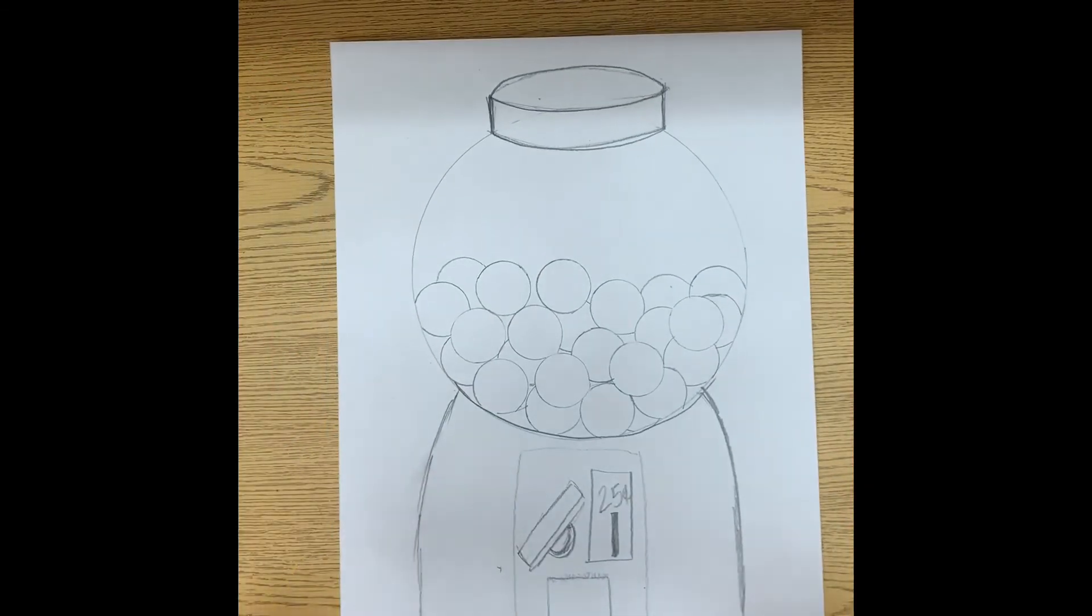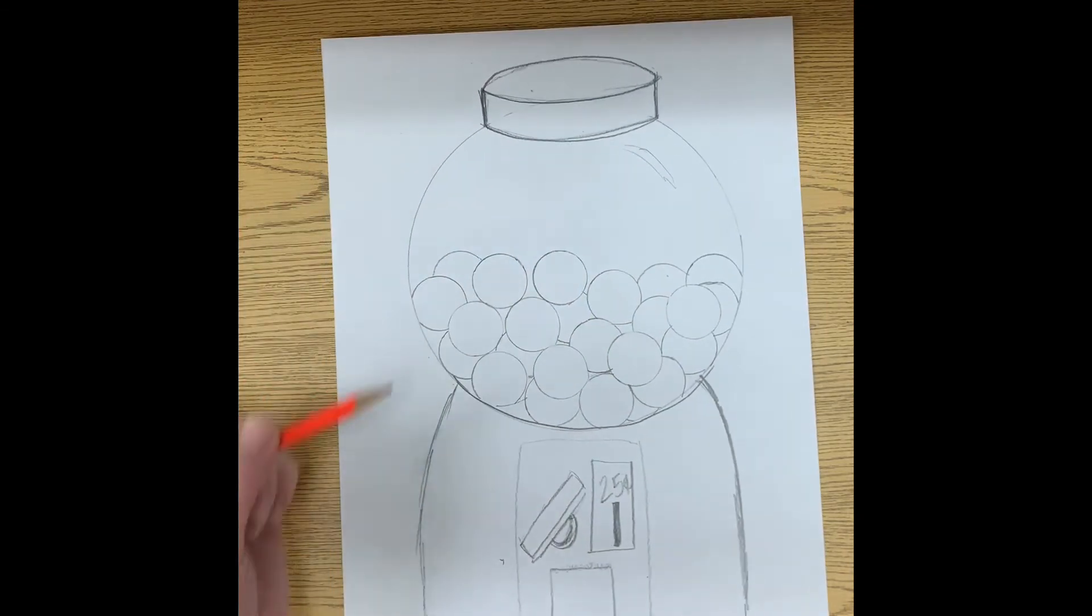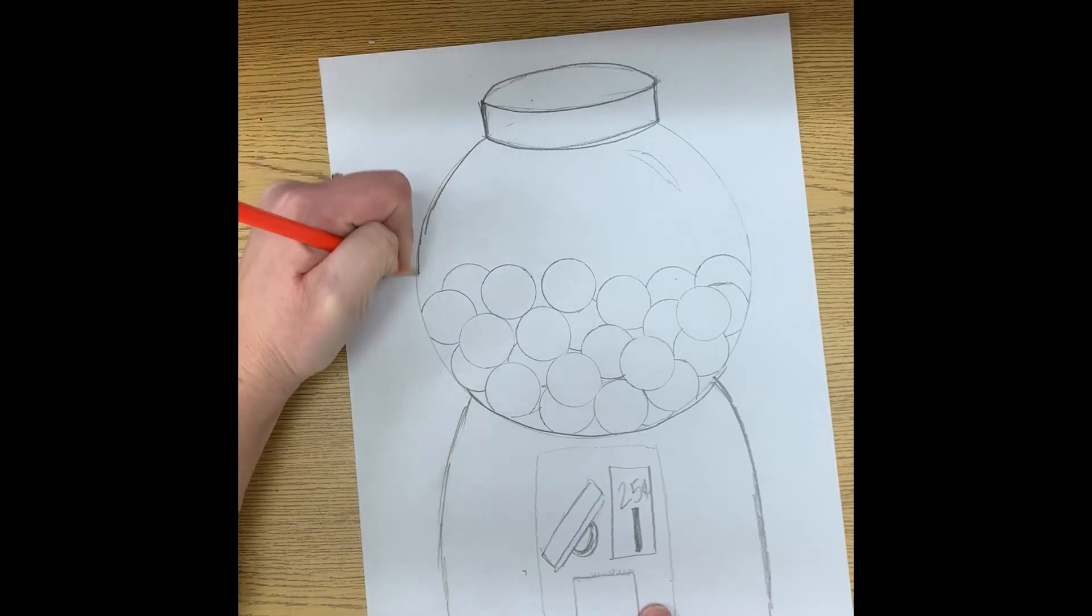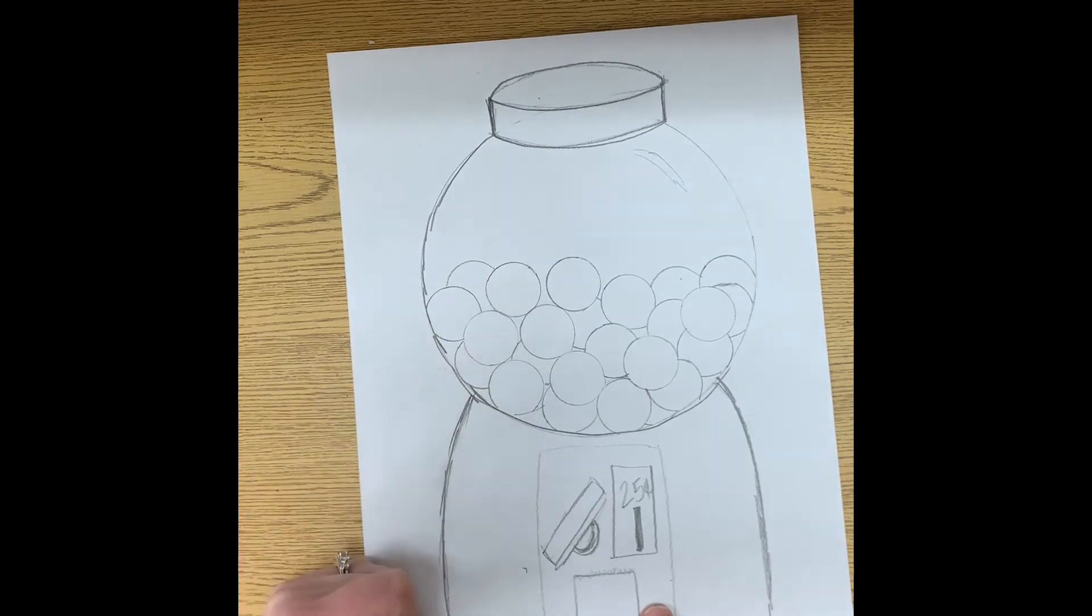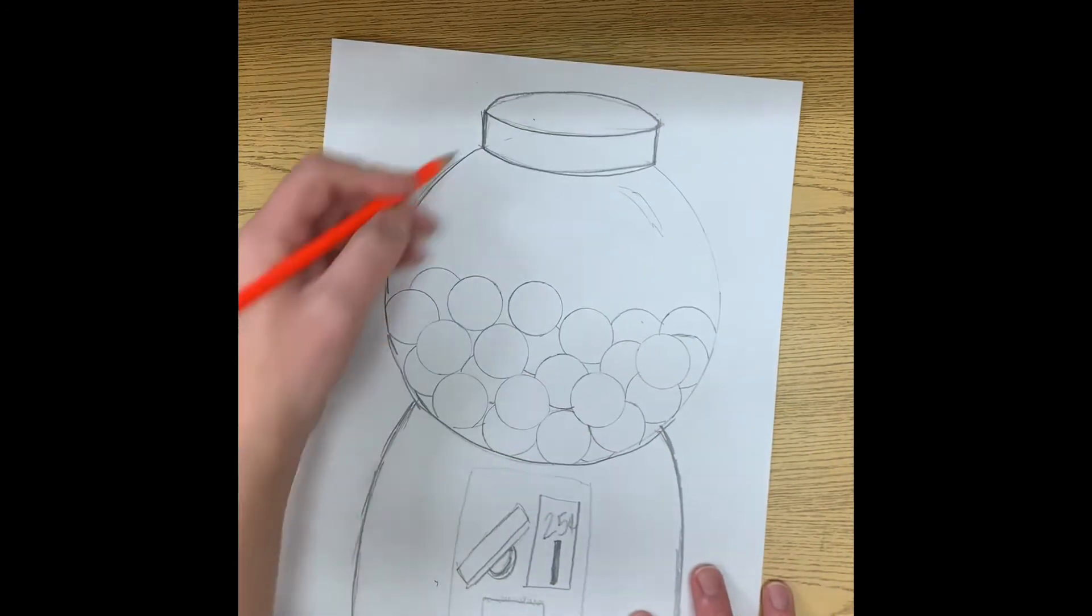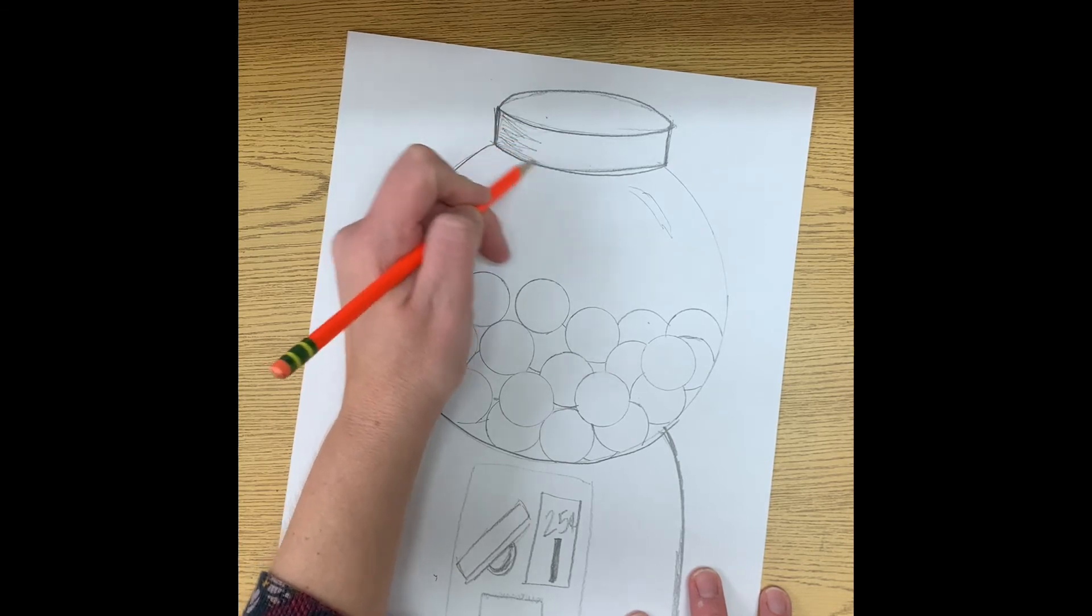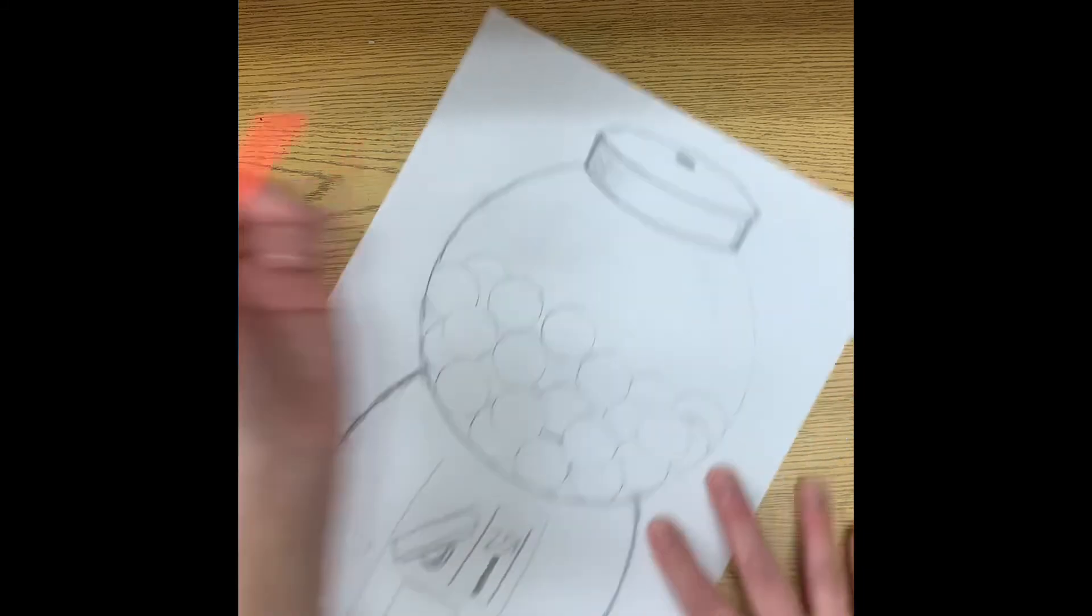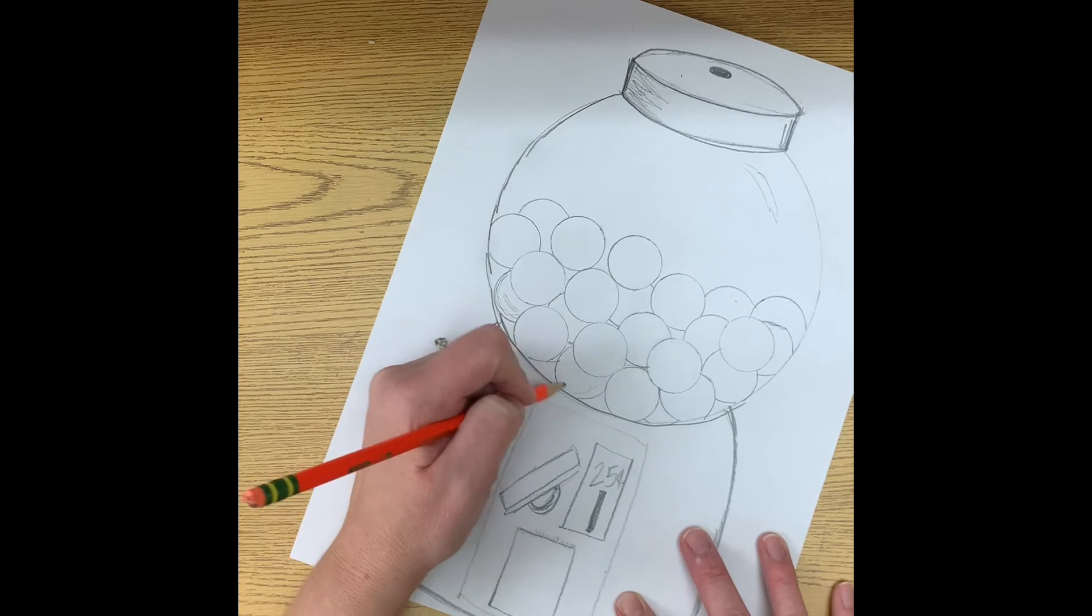Okay, so that's about it. You can keep going if you want. You can add a little shine to the globe, that's what that part's called, of your gumball machine. You can color this in. You can leave it a pencil drawing. If you leave it a pencil drawing, I just ask that maybe you add some value by just shading in a few little spots and finishing it up.